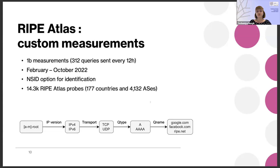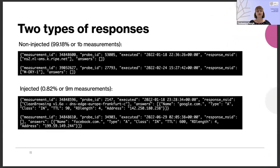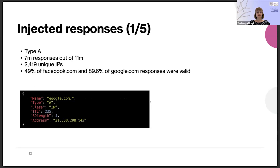Looking at those measurements, we divided them into two broad categories. The first is measurements with non-injected responses — expected behavior, since we do not expect responses for our requests from root servers. The second group is less than 1%, but in those cases RIPE Atlas probes received some kind of response. We received five types of responses in total. The most common was the A record type, with probes receiving more than 2,000 unique IP addresses. Interestingly, the majority of returned responses were actually valid — 50% of Facebook queries and 90% of Google queries — even though those responses were not expected.